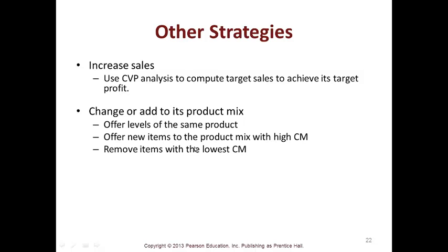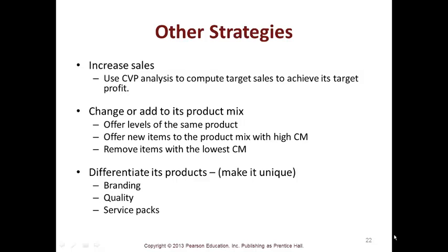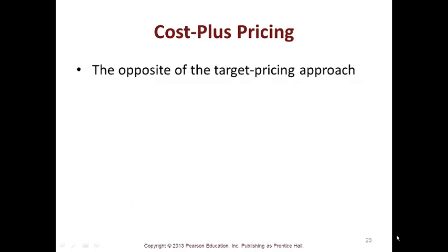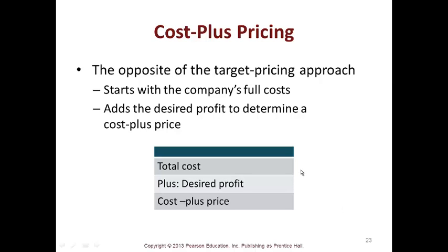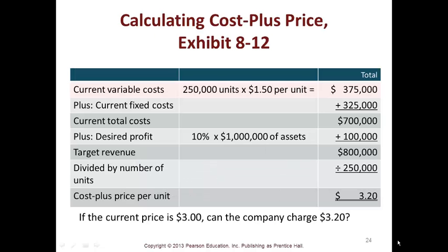Other strategies: offer new items to the product mix with high contribution margin, remove items with low contribution margin, and differentiate your products — make it unique through branding, quality, and service packs. Cost-plus pricing is the opposite of target pricing: you know your cost and add the desired profit. The calculation starts with variable cost plus fixed cost, add desired profit, giving you target revenue divided by units — so you must sell at $3.20 to get that desired profit.